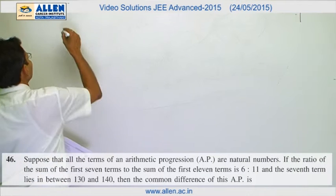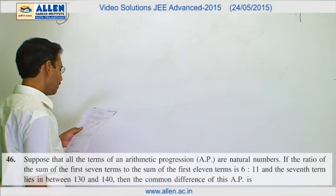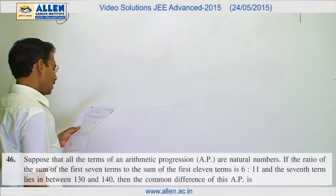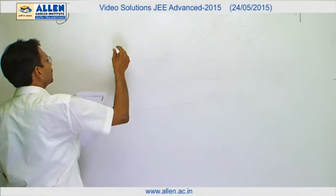Question number 46, a very simple problem of arithmetic progression. All the terms are natural numbers and the ratio of 7th and 11th term.